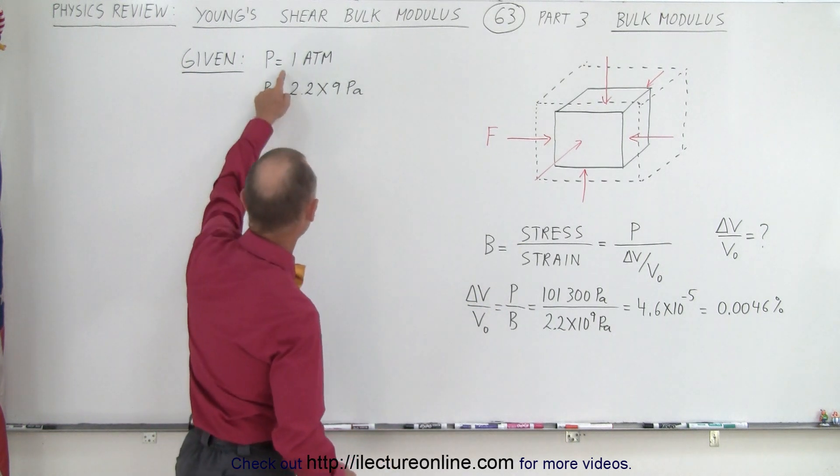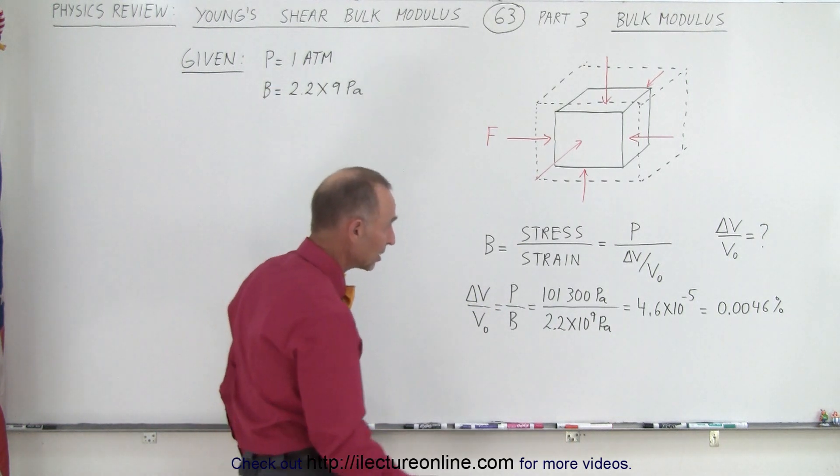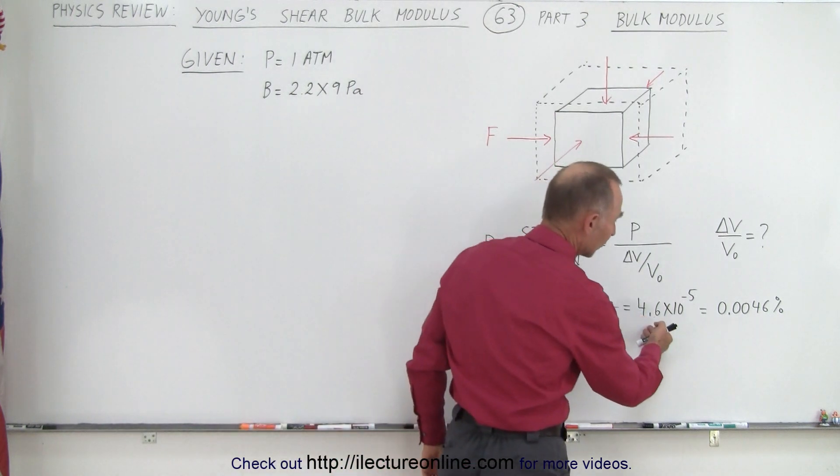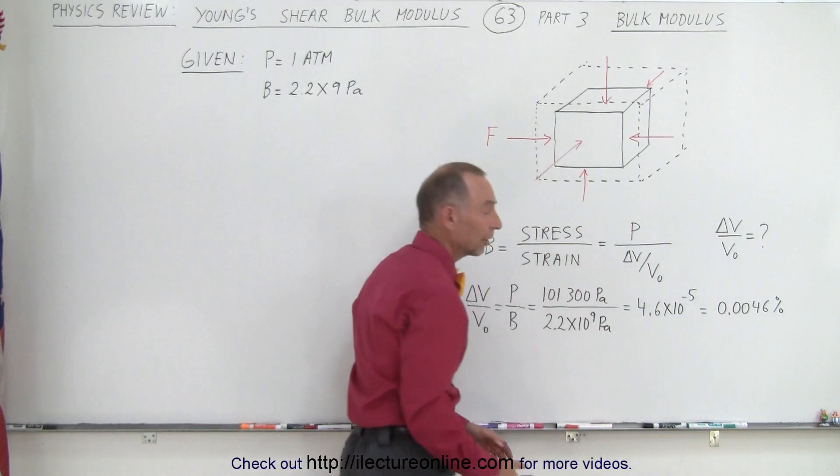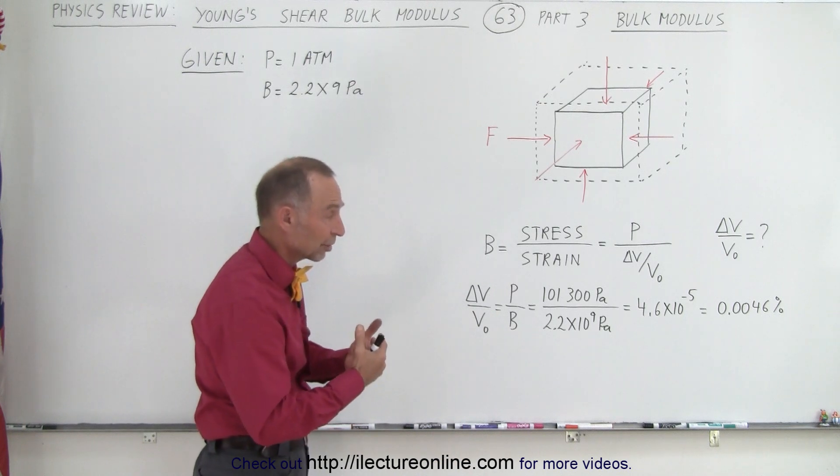So if the pressure is given and the bulk modulus is given, you plug in the numbers and you end up with a number. And if we convert that to a percentage, notice that under one atmosphere of pressure the change in volume, the fractional change in volume, is very, very tiny.